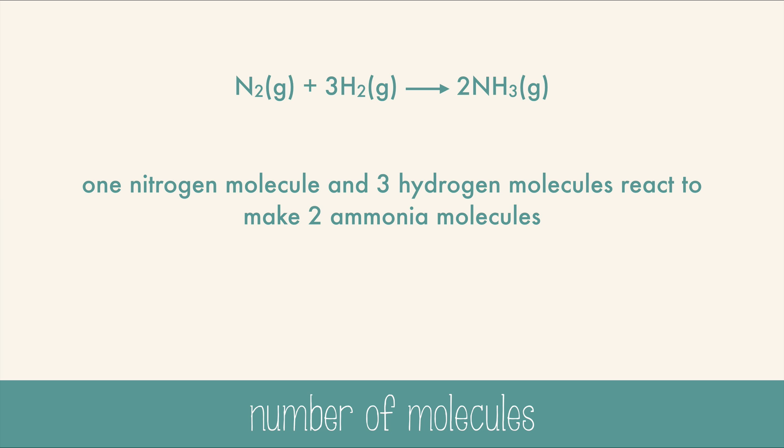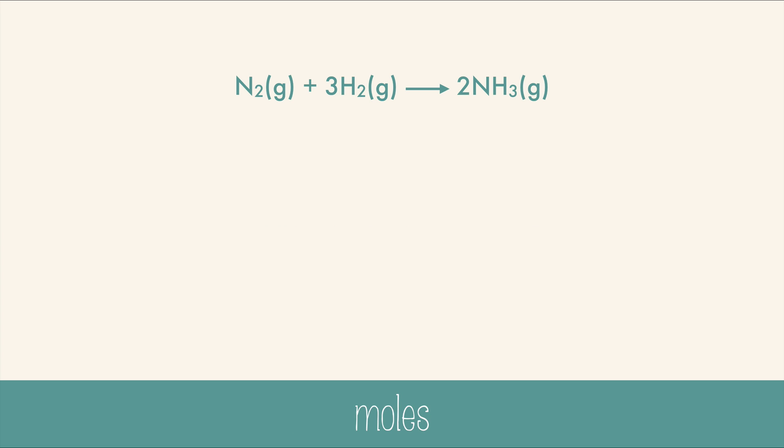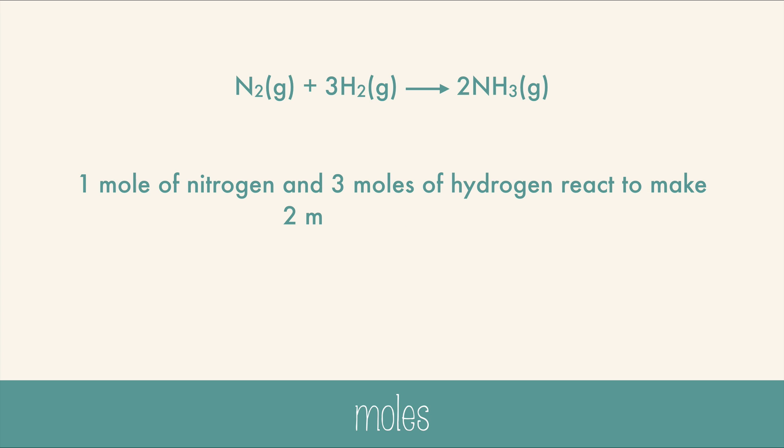This ratio of molecules will always stay the same for this reaction, but the total numbers are not conserved. Now moles: one mole of nitrogen and three moles of hydrogen react to make two moles of ammonia. The coefficients of the balanced equation tell you how many moles of each substance there are, but again moles are not conserved.